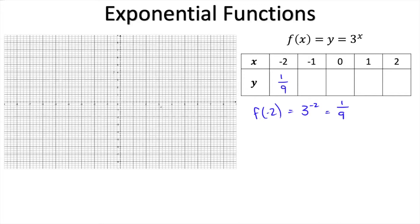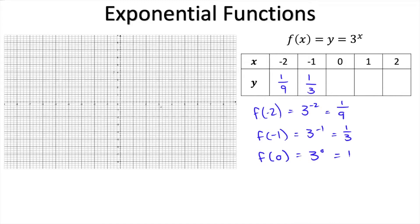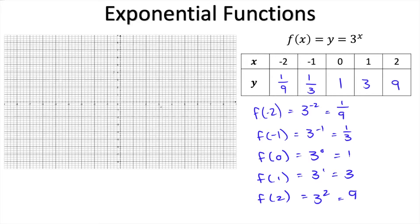We pop 1 over 9 into our table and repeat with x equals negative 1, getting one third. Then f of 0 gives us 3 to the power of 0 which equals 1, so we pop 1 into our table. Then f of 1 gives us 3, and f of 2 gives us 9.